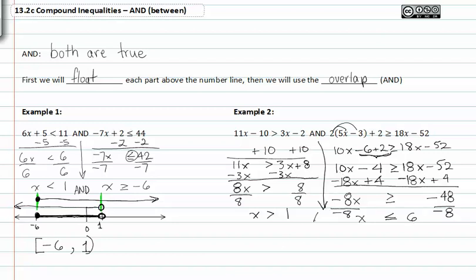Since this is an AND compound inequality, we have to remember that it's where these two overlap. So let's go ahead and graph it. X greater than 1, let's call that here, it's an open dot heading to the right. And x less than or equal to 6, we'll call this 6 here and it's a closed dot heading to the left.